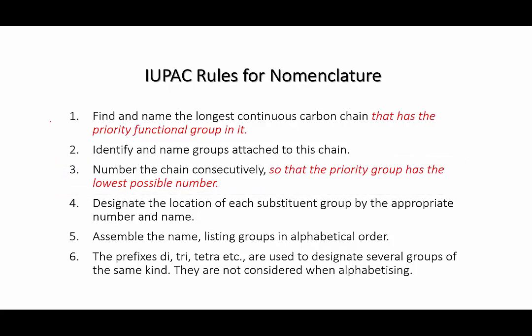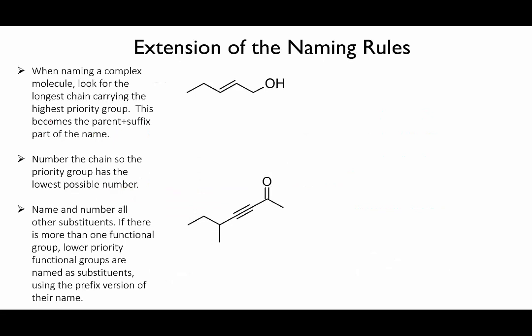Some fairly easy ones first to show you how to deal with alkenes and alkynes that have extra functional groups. Here we have something that's both an alkene and an alcohol. Alcohols come further up the priority list, so the name is going to end in ol. There are five carbons, so it's based on pentane, but there's a double bond, so that makes it pentene. And then we add the ol, and that gives us pentenol.